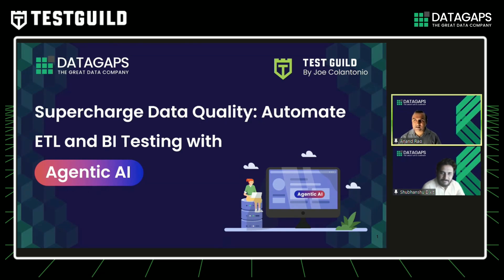Traditional testing methods have struggled with scalability, complexity, and the changing data landscape. Agentic AI now promises to transform this process by enabling real-time anomaly detection, intelligent test automation, and continuous monitoring to ensure you have trustworthy, high-quality data for analytics and decision-making.